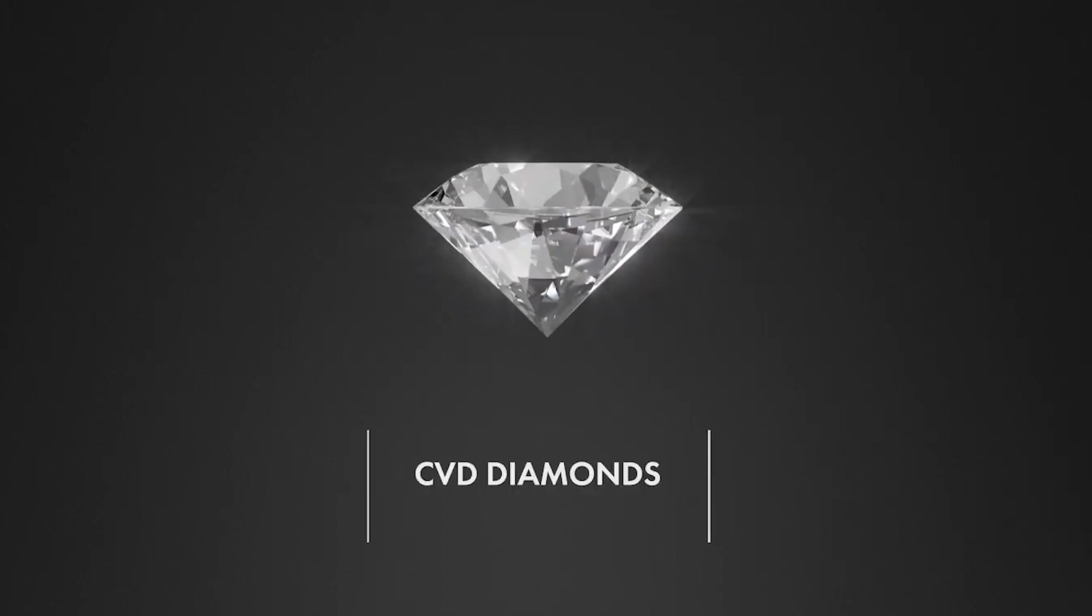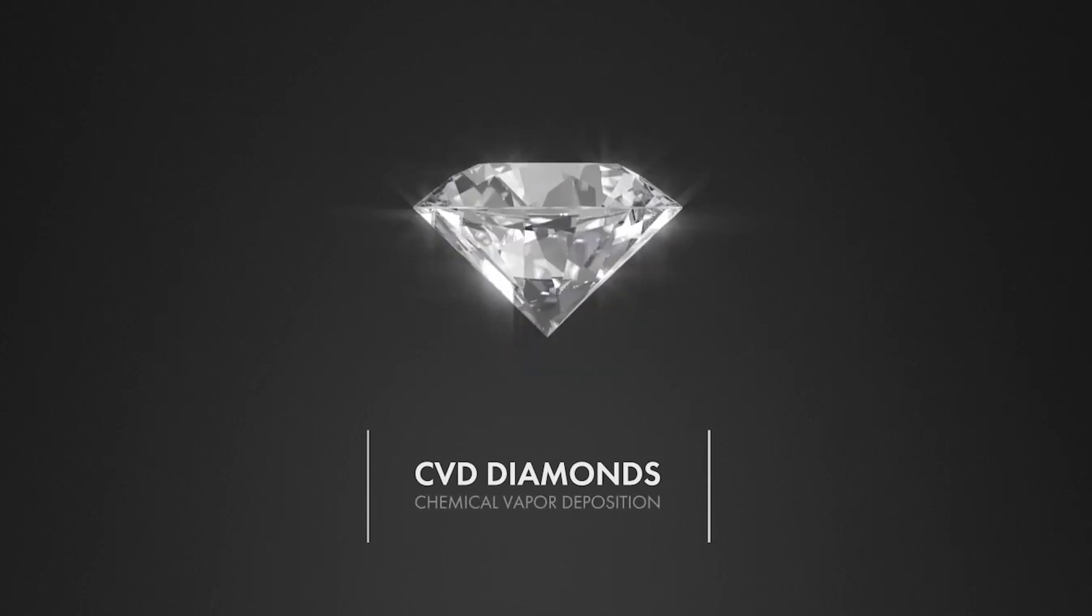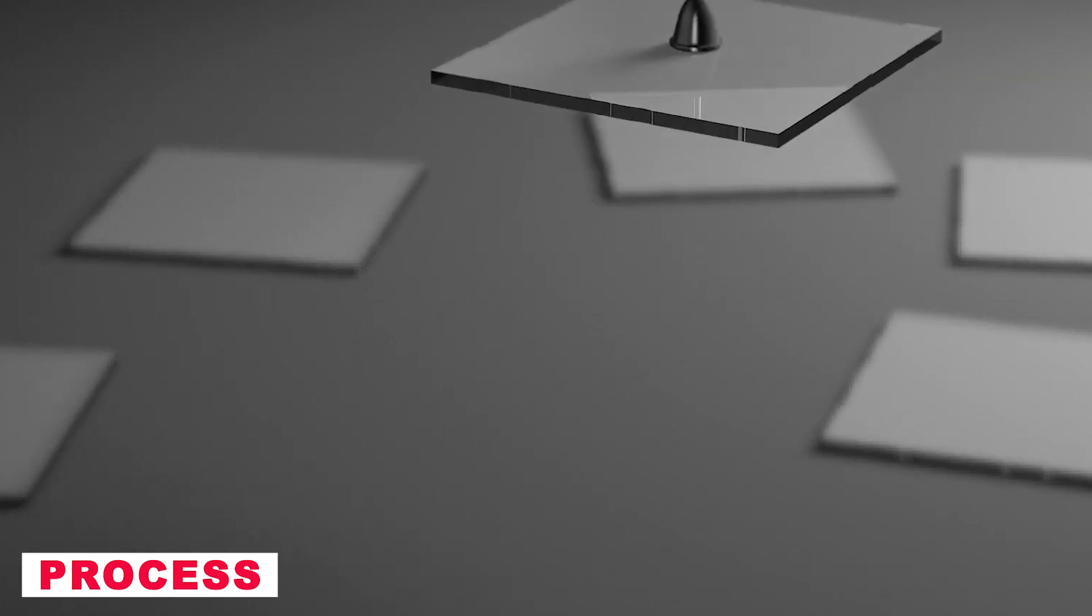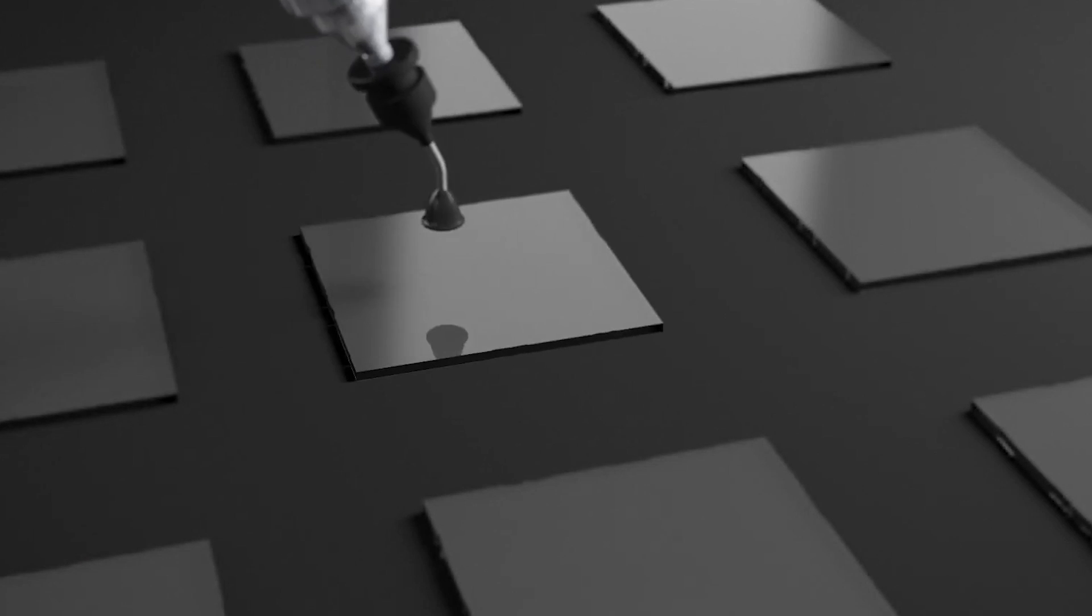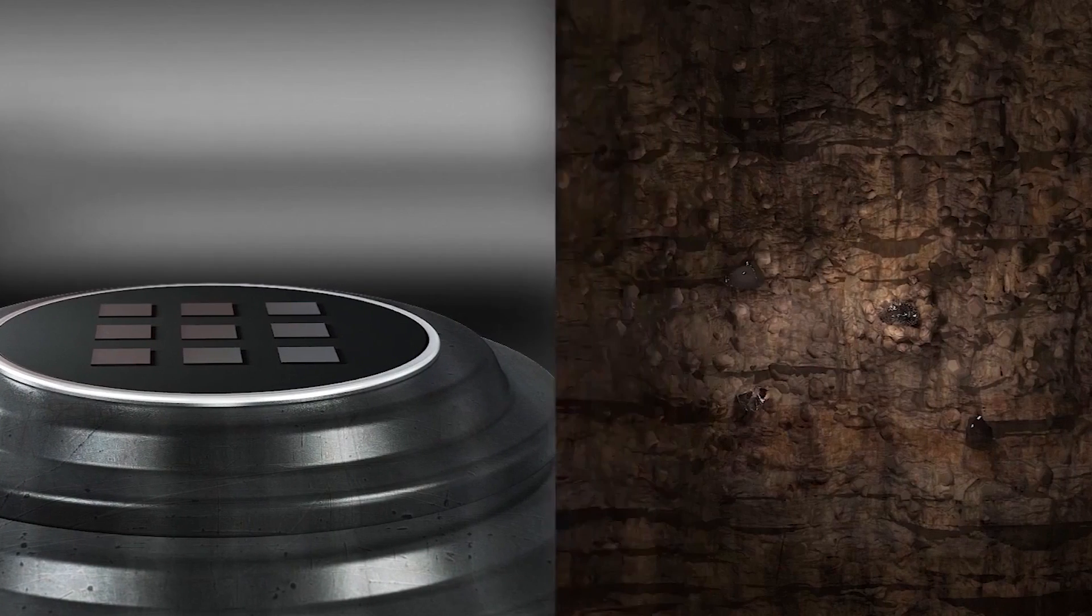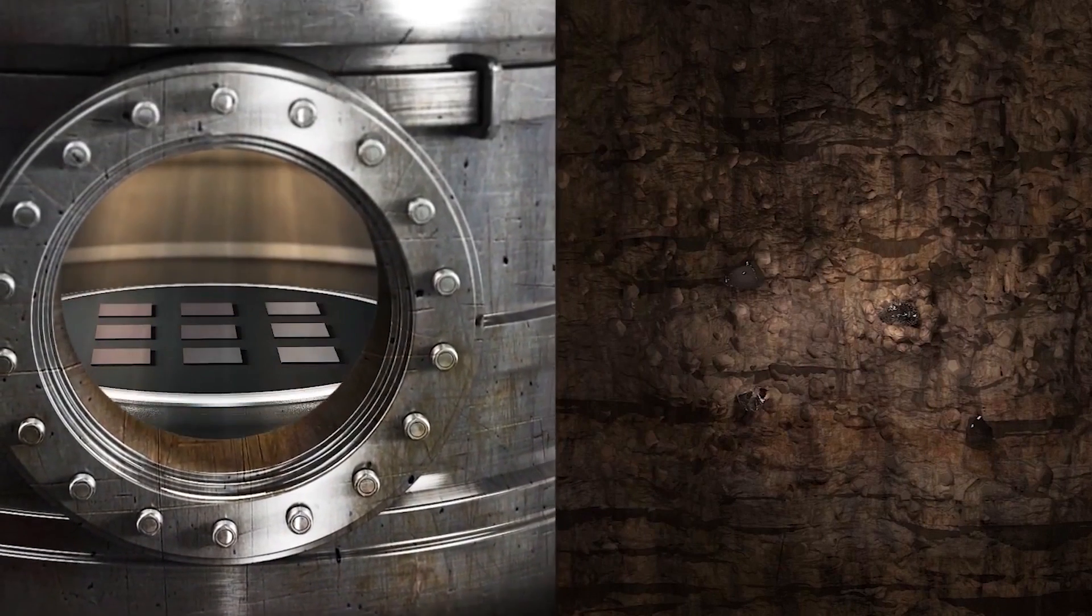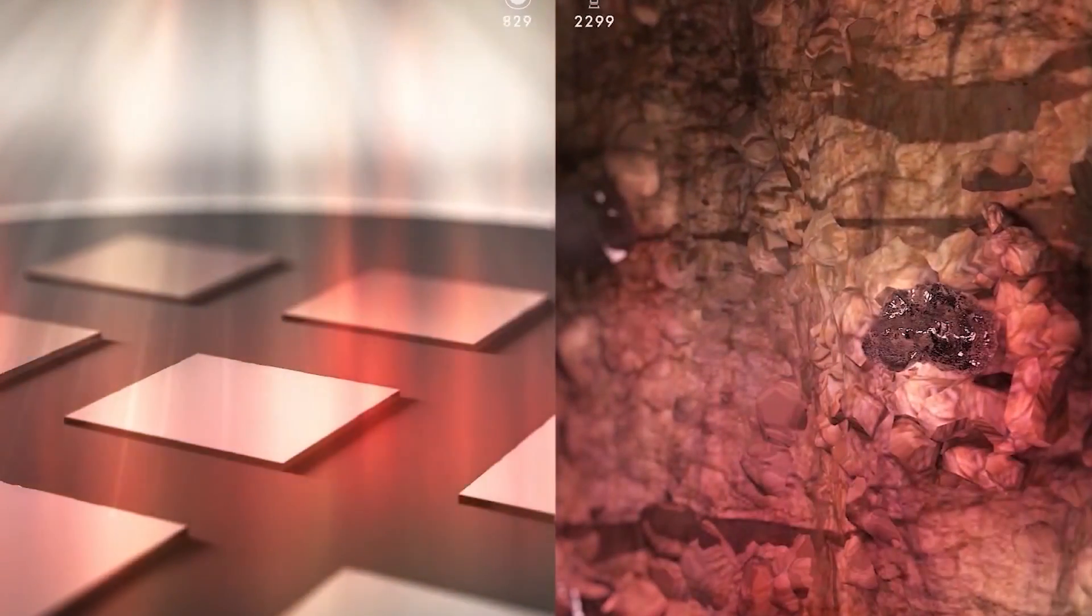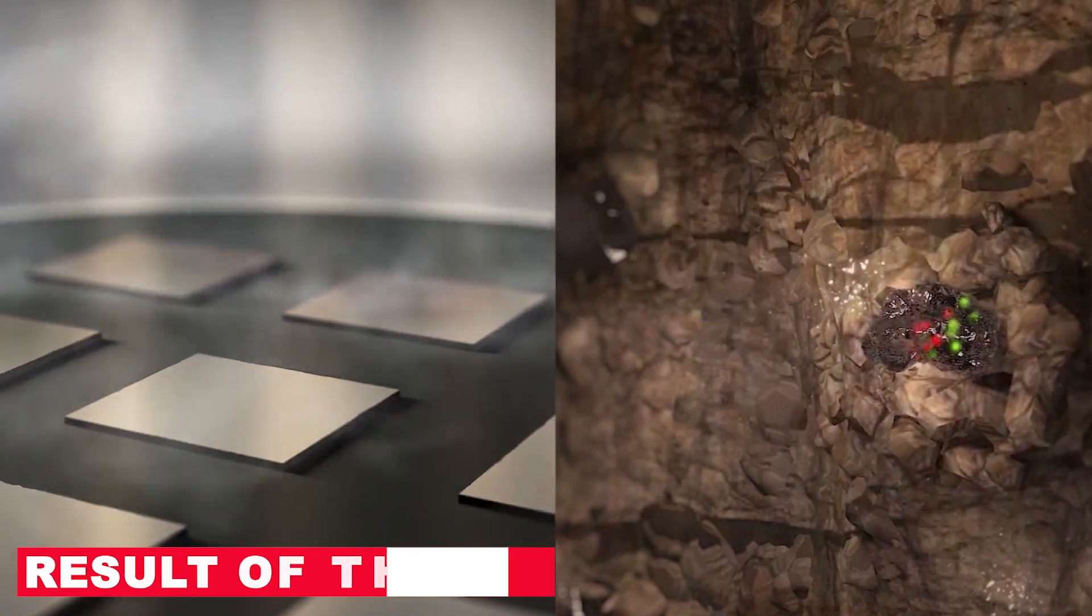CVD is a cutting-edge technique for growing diamonds layer by layer, replicating the conditions deep within the Earth's mantle. The process begins with a thin, flat diamond seed, often just a few millimeters in size. This seed is placed in a vacuum chamber filled with a carbon-rich gas such as methane. In the chamber, the gas is heated to extremely high temperatures, around 900-1200 degrees Celsius.